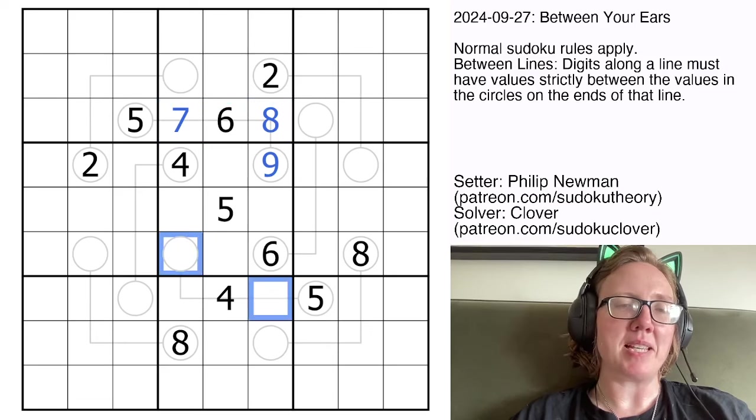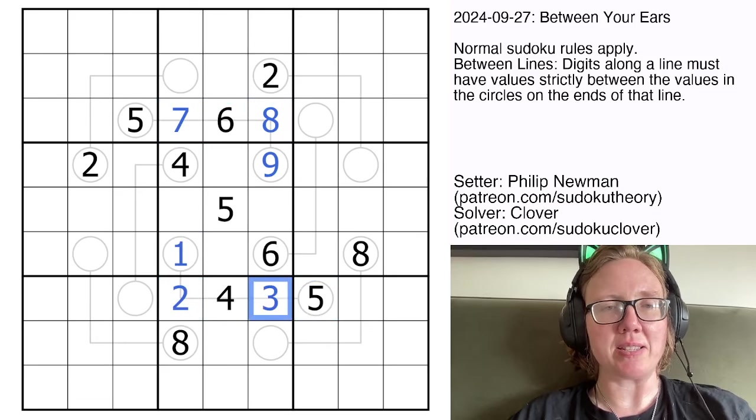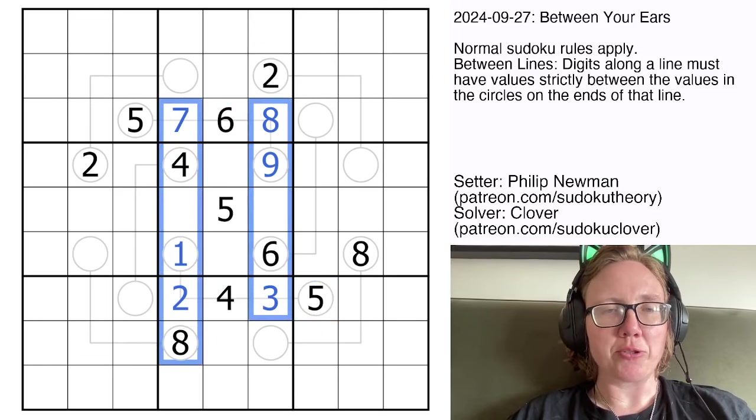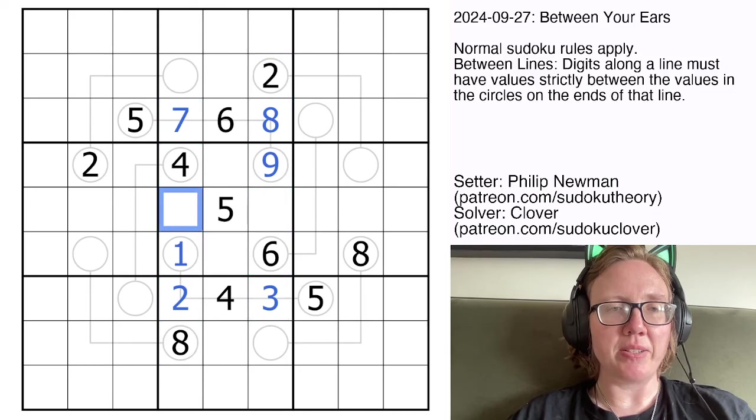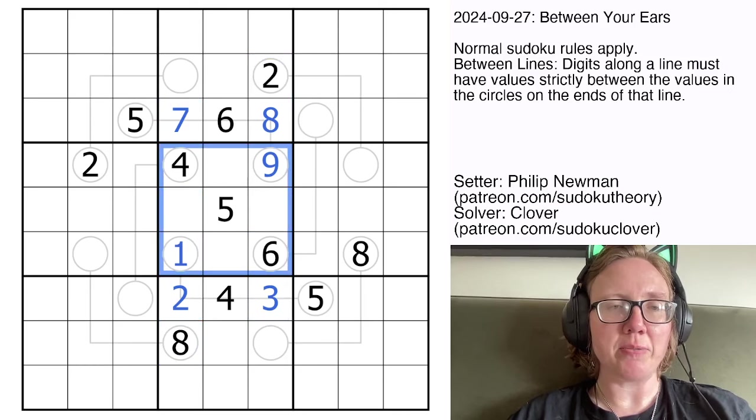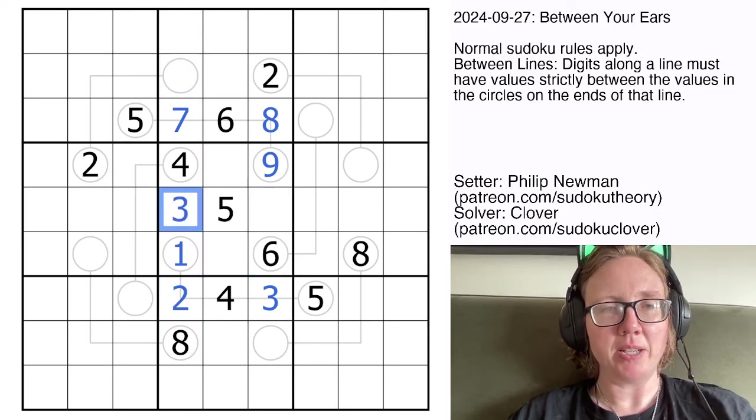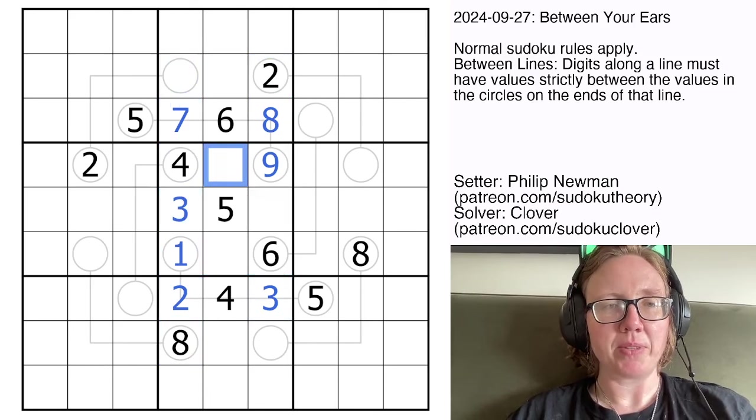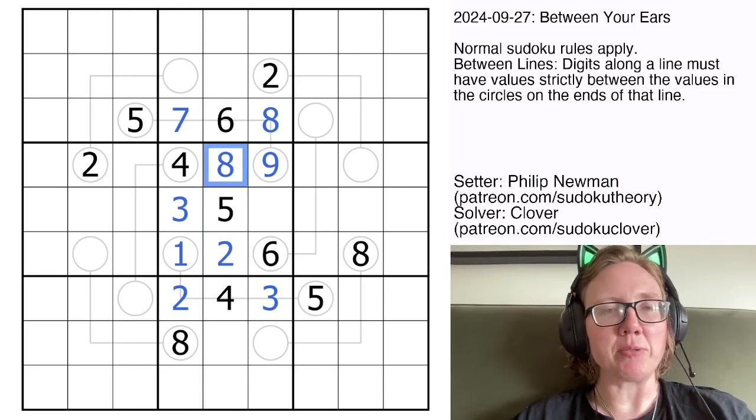The exact same thing is happening here. The only value that can work there is a 1, leaving this as a 2 and 3. We can also resolve this central region using these columns, because we still need 2, 3, 7, and 8 in the center. We have 2, 7, and 8 in the column. Here we have 2 and 8 in the column, so 2 and 8 will go in those cells, and this will be a 7.